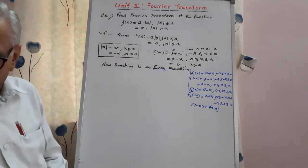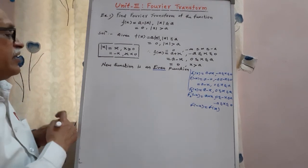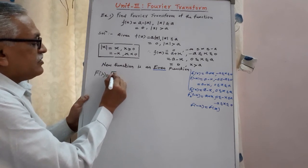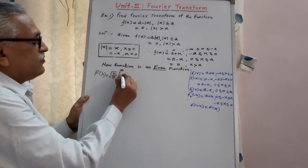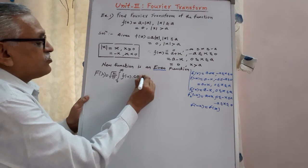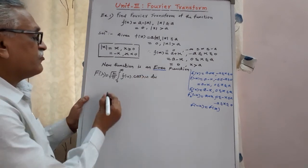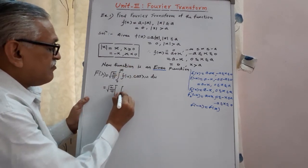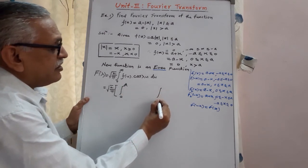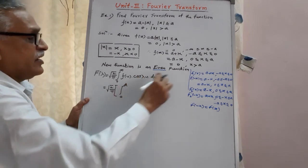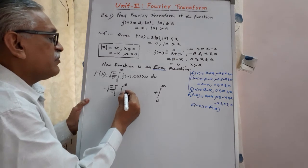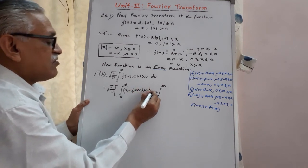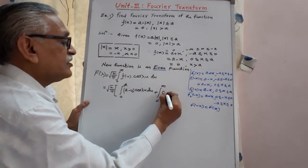As it is an even function, we apply the corresponding formula. The Fourier transform for an even function is given by root 2 by pi, integral from 0 to infinity, f of u into cos of lambda u, du. We split the integral as 0 to a and a to infinity. From 0 to a the function value is a minus u, and from a to infinity the value is 0 into cos of lambda u.